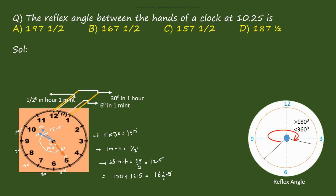The reflex angle must be greater than 180 degrees and less than 360 degrees. Since 162.5 degrees is not a reflex angle, we subtract from 360 degrees: 360 minus 162.5 equals 197.5 degrees. This is the reflex angle. The answer is option A, which is 197.5 degrees, also written as 197 and a half degrees.